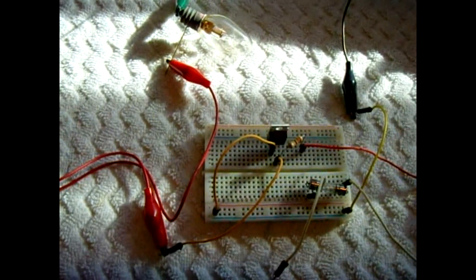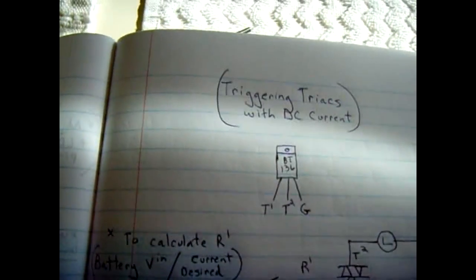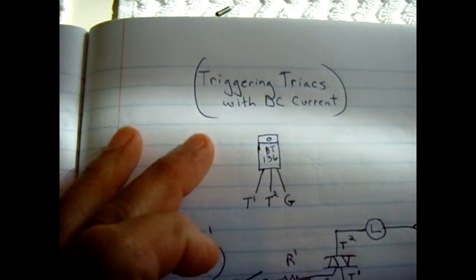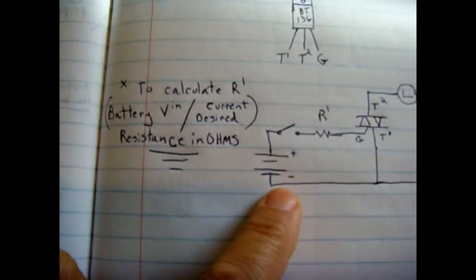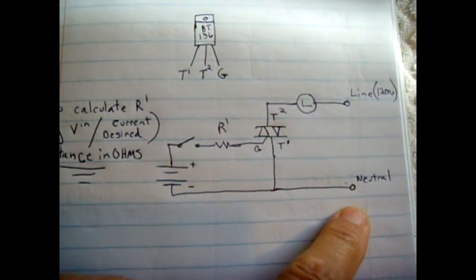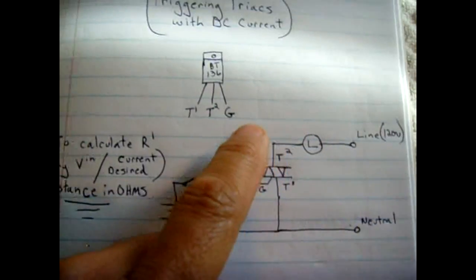Okay, this tutorial is for triggering triacs with DC current. Most people don't realize that you can have a separate DC supply to trigger a triac, like in this schematic right here.